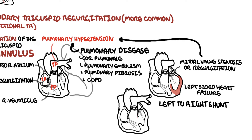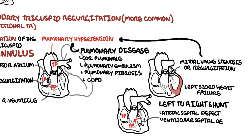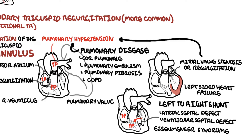Left-to-right shunt is another cause of tricuspid regurgitation due to increased pressure in the right ventricle. This includes atrial septal defect, ventricular septal defect, and Eisenmenger syndrome. Stenosis of the pulmonic valve or the pulmonary artery and hyperthyroidism are also causes.